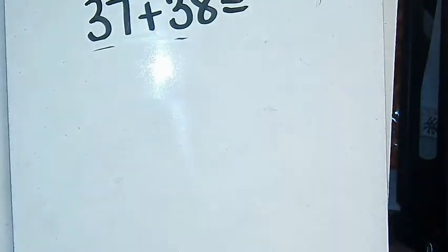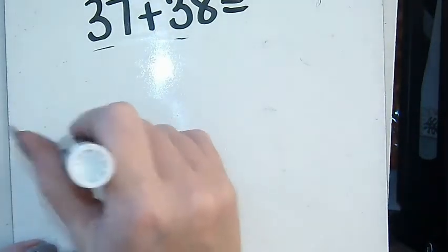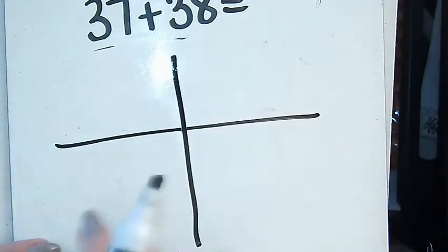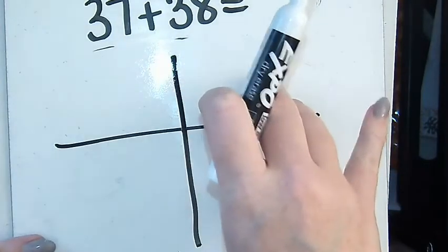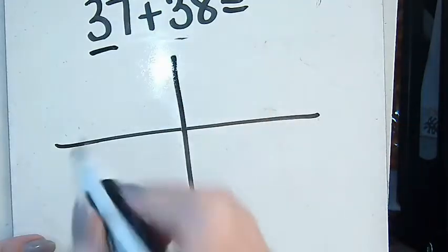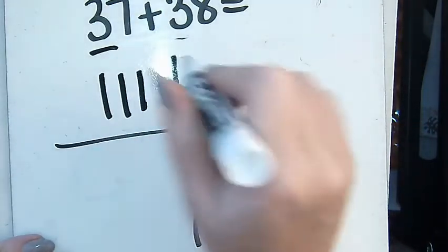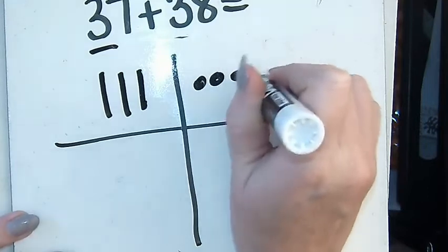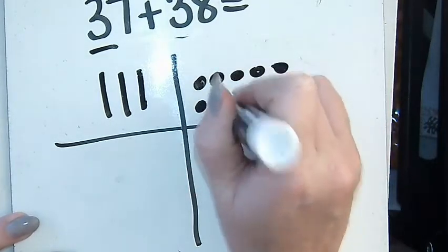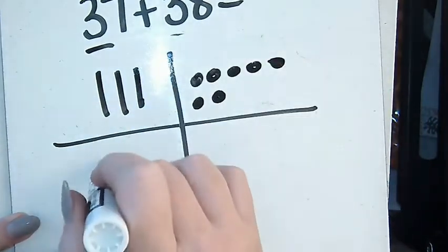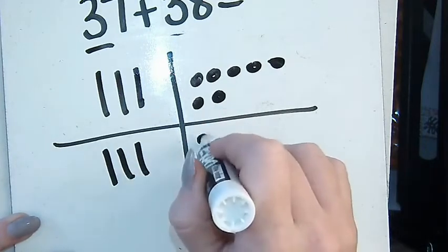So I set it up similarly. I'm going to draw this little table so I have my tens here and my ones here. My first number is 37, so I'm going to draw 3 tens and 7 ones. Then my second number is 38, so I'm going to draw 3 tens and 8 ones.